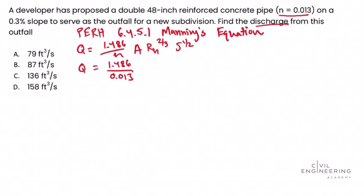A is the cross-sectional area of the pipe. A pipe is circular unless told otherwise, so the area equals pi r squared. The pipe is 48 inches, which equals 4 feet — we want to work in feet with Manning's equation because discharge is in cubic feet per second. So a 48-inch diameter pipe is a 4-foot diameter pipe, giving a 2-foot radius.